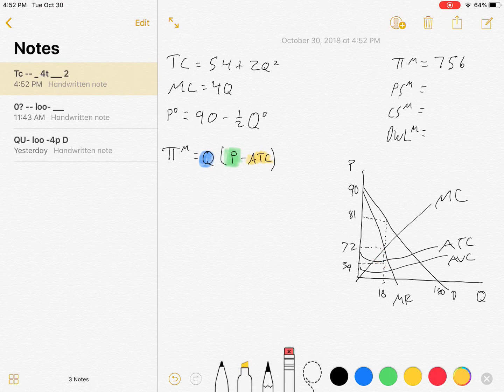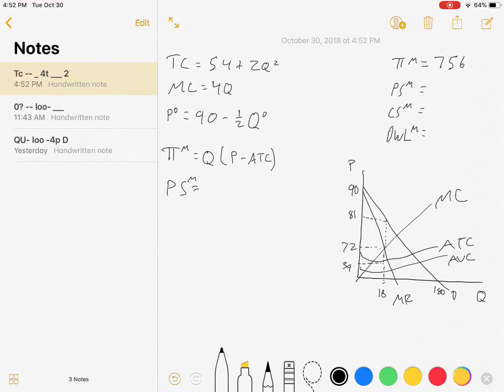We got profit, now we need to calculate producer surplus. Producer surplus equation is very similar to profit: PS = Q(P - AVC). Very similar measures, both give you some sense of well-being for the firm, but they're measuring slightly different things. Profit includes the fixed costs, whereas producer surplus only considers variable costs. We already have Q and P: Q is 18, P is 81.